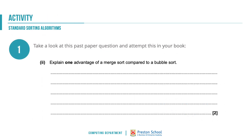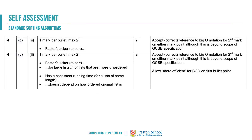Here's another exam example: 'Explain one advantage of a merge sort compared to a bubble sort.' For two marks, good answers include that merge sort is faster or quicker to sort large lists or lists that are more unordered. You may also note that merge sort has a fairly consistent running time, so it doesn't depend on how ordered the original list is.